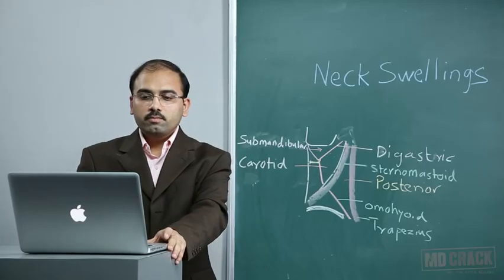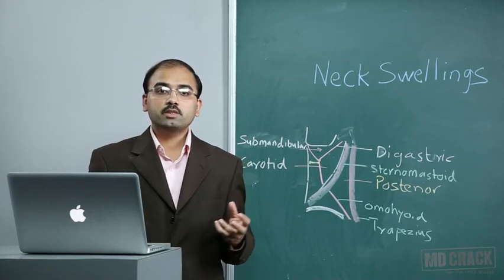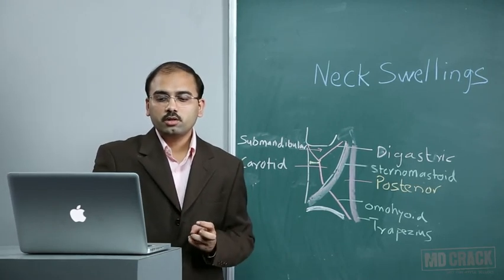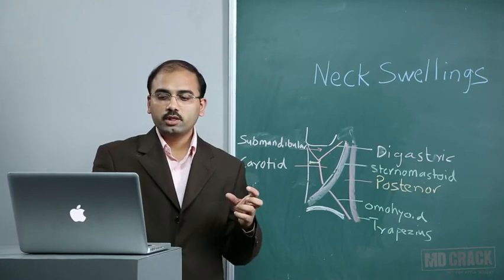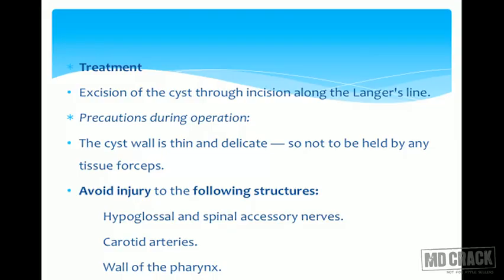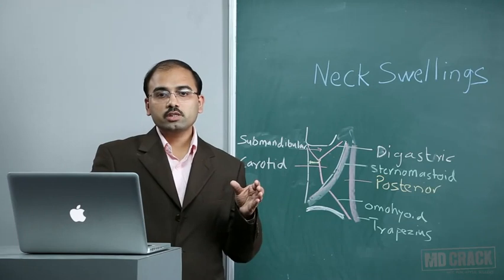Differential diagnoses for branchial cyst include cold abscess, cystic hygroma, plunging ranula, cervical dermoid, carotid body tumor, solitary enlarged lymph node, and submandibular salivary gland swelling. Treatment is excision through an incision along the lines of Langer. Precautions during excision: the cyst wall is thin and delicate — do not grasp with tissue forceps. Structures to avoid injury include the hypoglossal and spinal accessory nerves, carotid arteries, and wall of the pharynx.